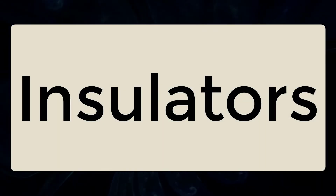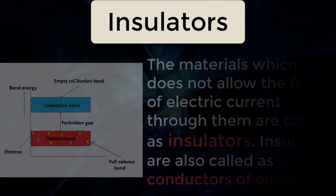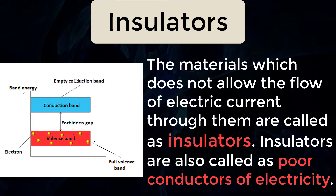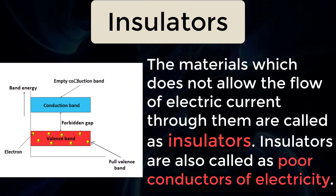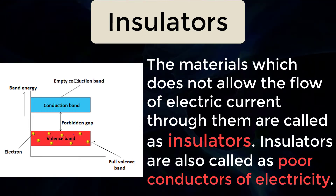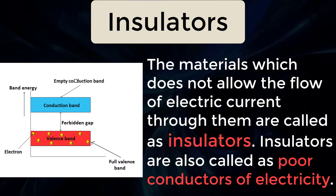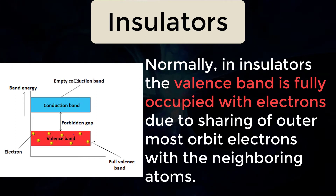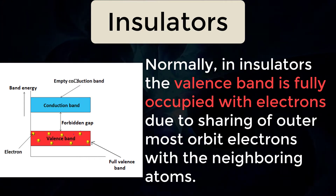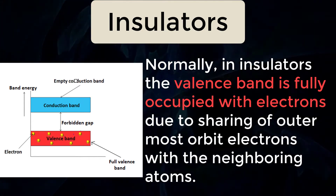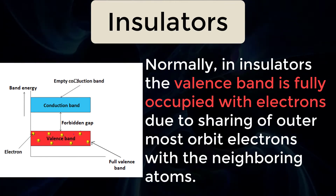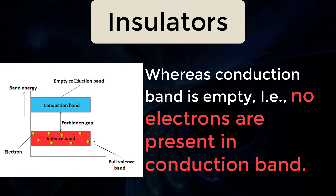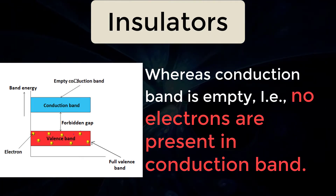Now let's look into insulators. The materials which do not allow the flow of electric current through them are called insulators. Insulators are also called poor conductors of electricity. Normally in insulators, the valence band is fully occupied with electrons due to sharing of outermost orbit electrons with the neighboring atoms, whereas the conduction band is empty — no electrons are present in the conduction band.